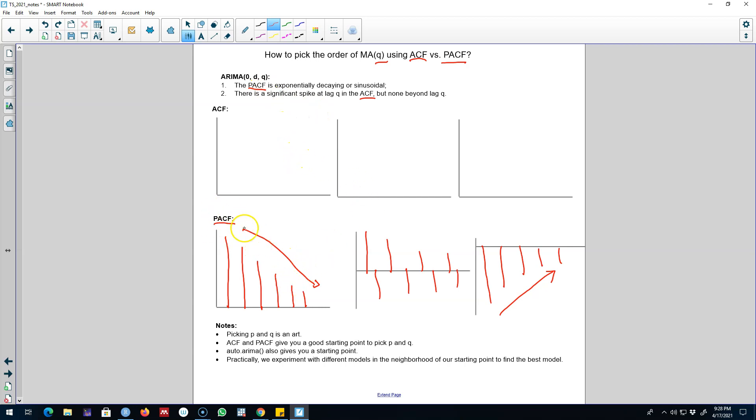So if our partial autocorrelation function decays exponentially, and we have a significant spike in the ACF at lag Q. In this case, we have just one significant spike. So this is the only significant spike that we have in the ACF.